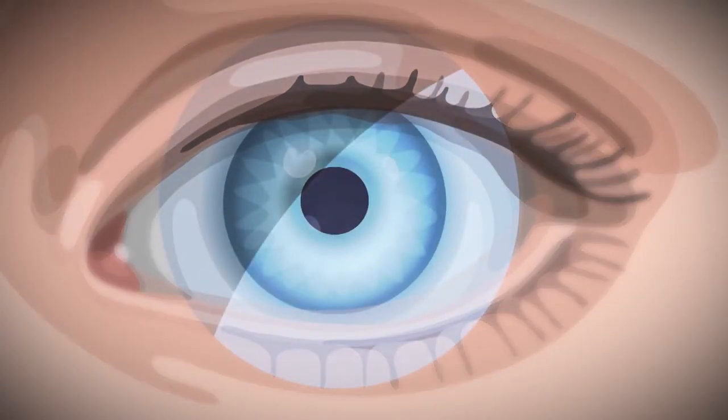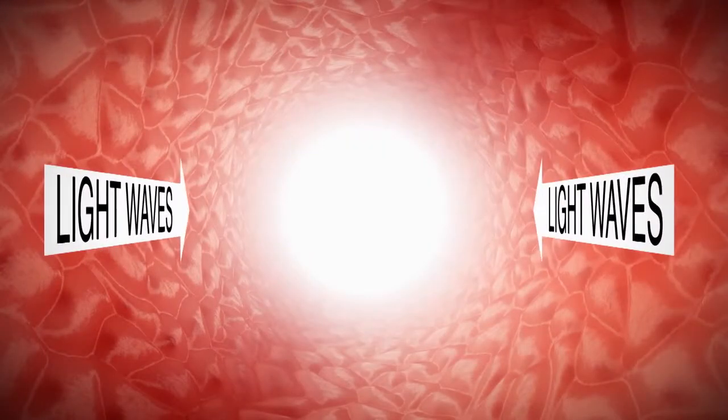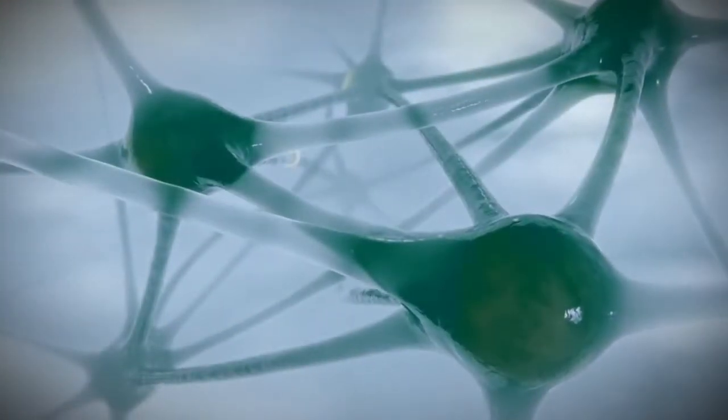The lens focuses light onto the retina, which captures and converts light waves into nerve impulses and sends them through the optic nerve to the brain.